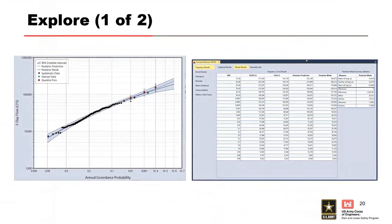Frequency results are the primary exploration tool for graphical and tabular results of the analysis. Shown on the left is the frequency curve, and shown are the posterior predictive curve with 90% credible interval and posterior mode curve. Shown on the right are the tabular results for the frequency curve, including the tabular summary for the AEP along with the parameter estimates and the summary statistics for the posterior mode. You can think of the posterior mode as the computed frequency curve and the posterior predictive as an expected or mean frequency curve.